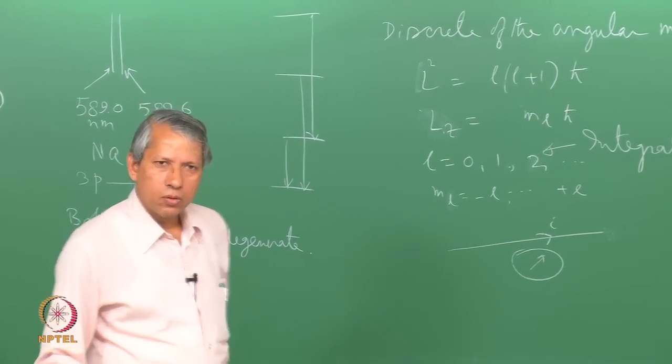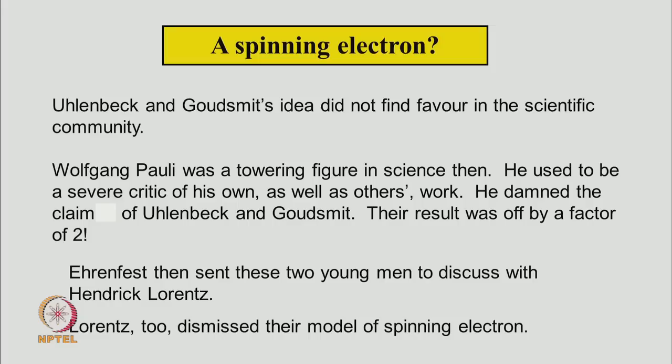So, Ehrenfest suggested that they discuss this with Pauli. Now, Pauli was a towering figure in science and he was a very severe critic of his own work as well as work of others. So, when Uhlenbeck and Goudsmit went and talked to him about their model, he simply said this is nonsense, he damned their work. It is also true that the calculation of Uhlenbeck-Goudsmit was differing by factor of 2 from the observation. So, then Ehrenfest sent these two young men to discuss with Hendrick Lorentz. Lorentz too dismissed their model of spinning electron.